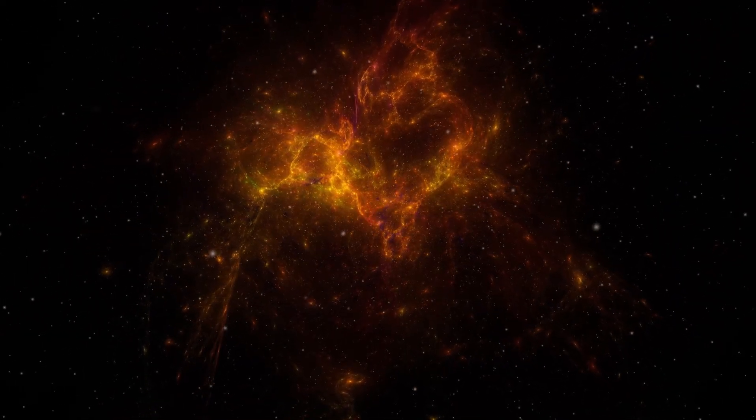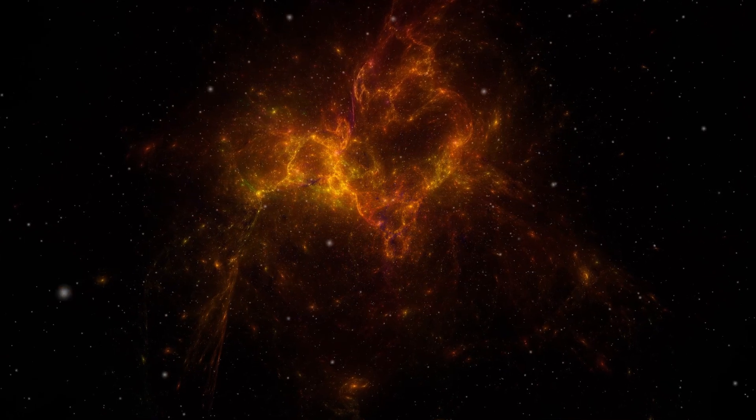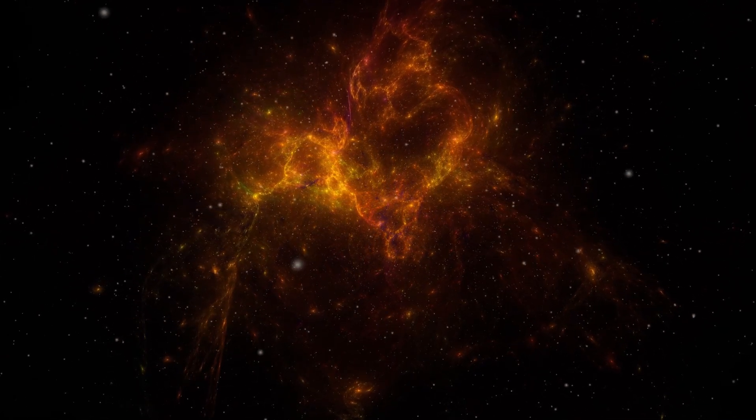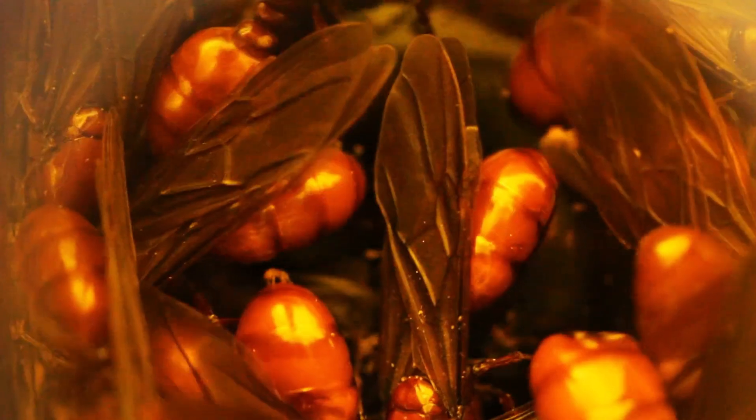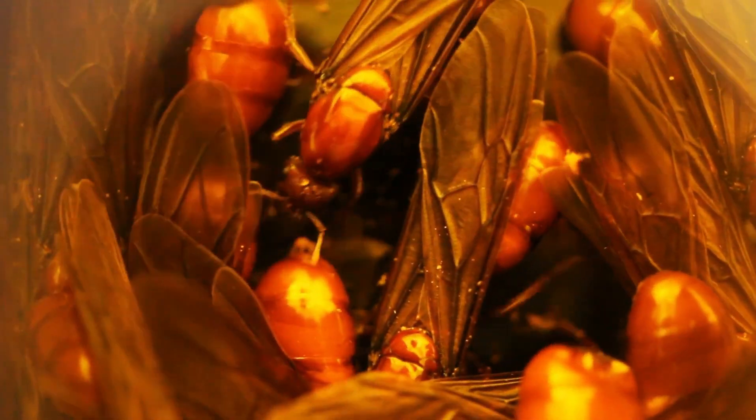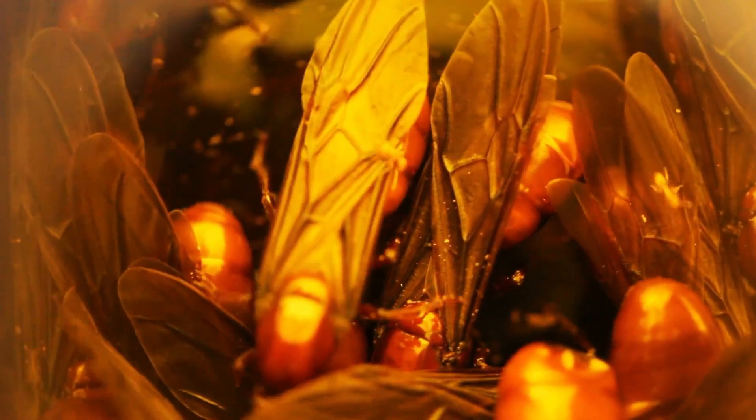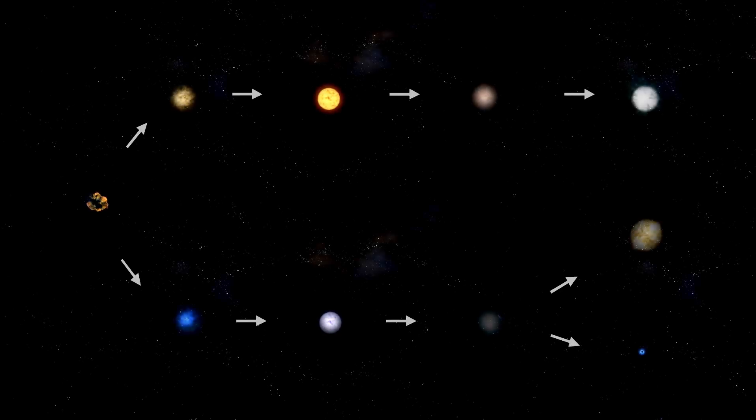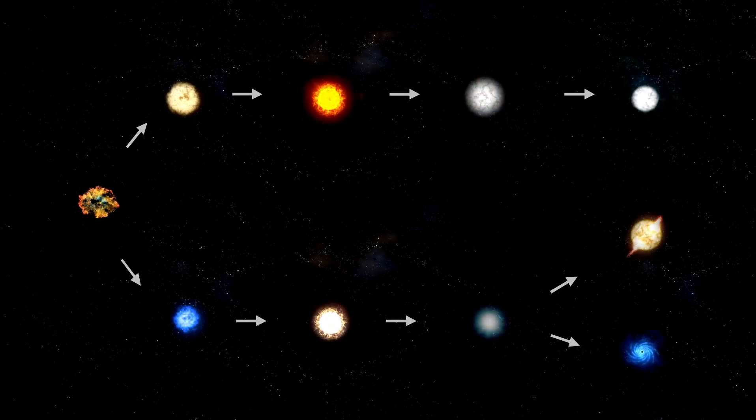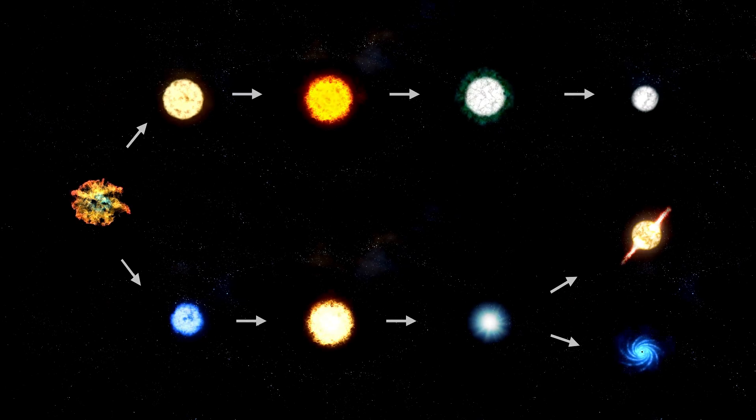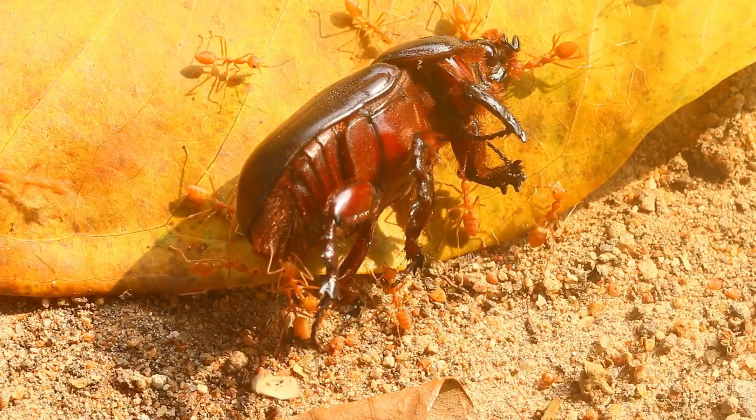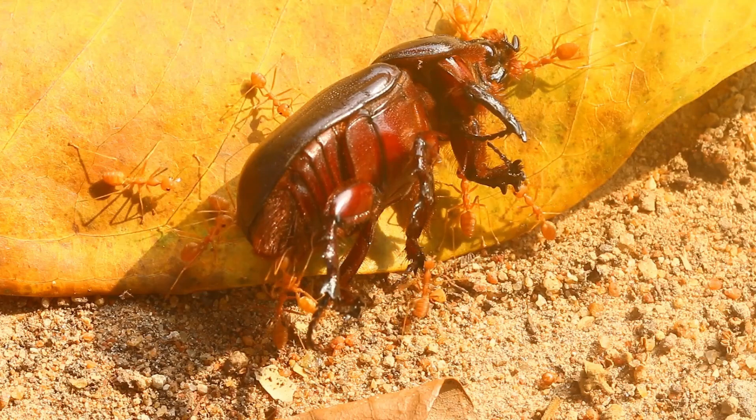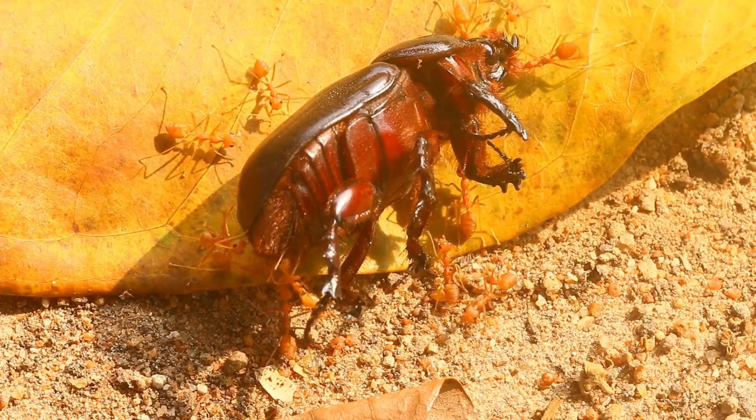Betelgeuse's sudden brightening serves as a reminder of the powerful and unpredictable forces at work in the cosmos. Stars are not static objects. They are dynamic systems that evolve and change over time. Betelgeuse, with its rapid fluctuations in brightness, provides a valuable glimpse into the complex and often violent processes that drive stellar evolution. As scientists continue to study this remarkable star, they are likely to uncover new insights into the forces that shape the universe.